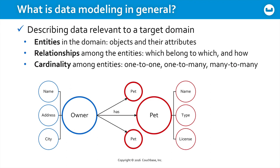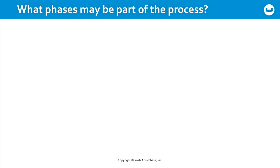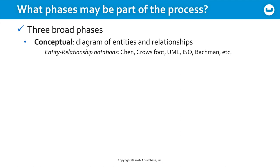So you might proceed through a series of phases in this process. First, there's the broad conceptual phase. You're visualizing everything, diagramming the entities and their relationships, trying to figure out who owns what. Now there's a lot of notation that has evolved over the years to do this — Chen, crow's foot, UML, all kinds of things. But you'll end up using what works for you.